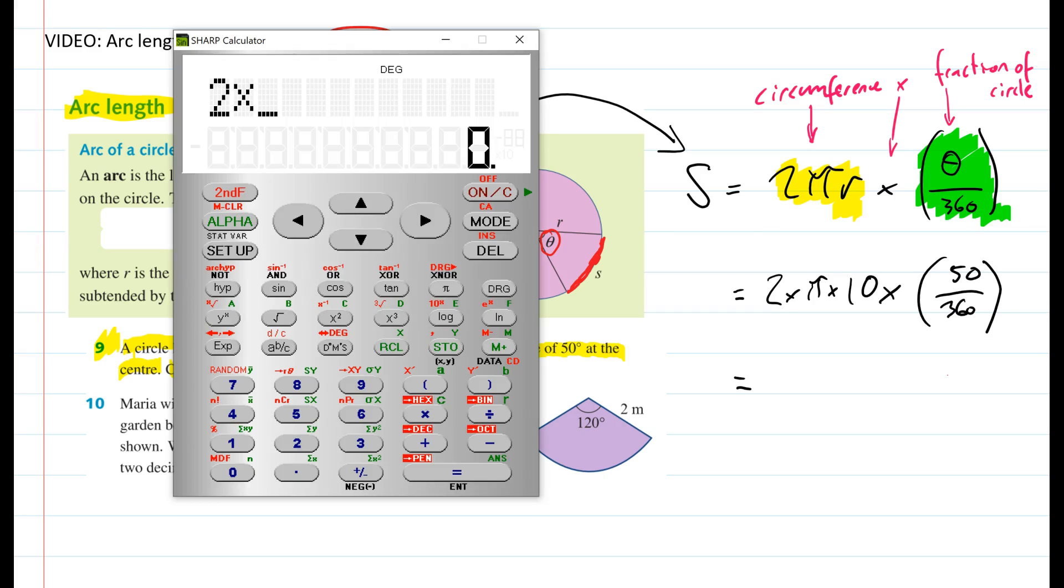2 times pi times 10 times, I should use a bracket, 50 over 360 equals 8.726.